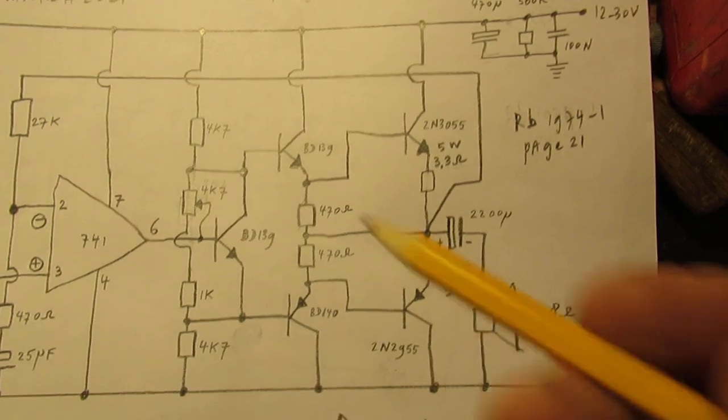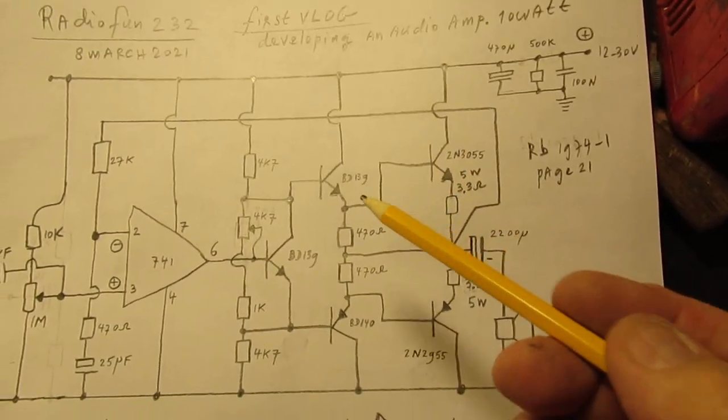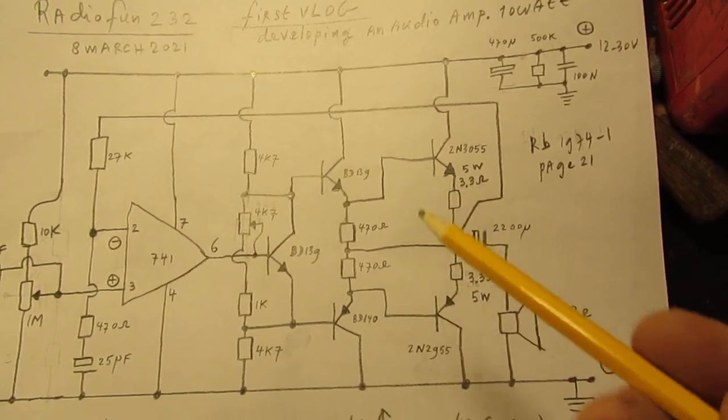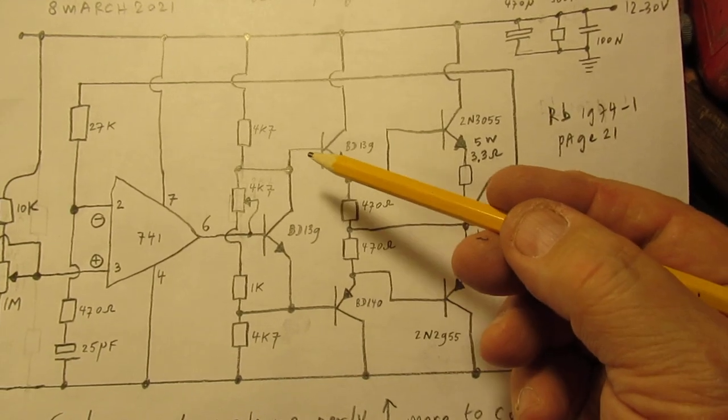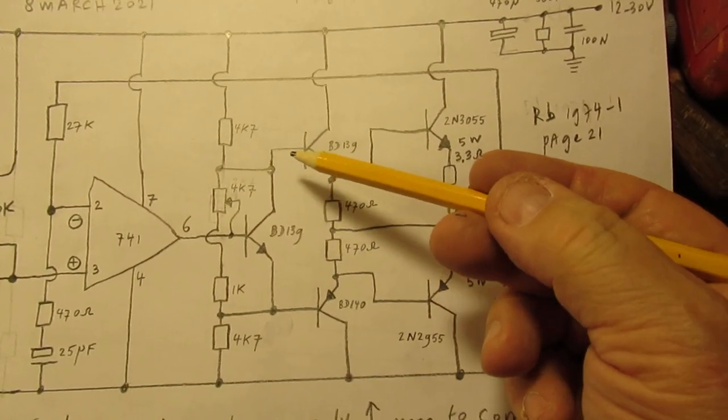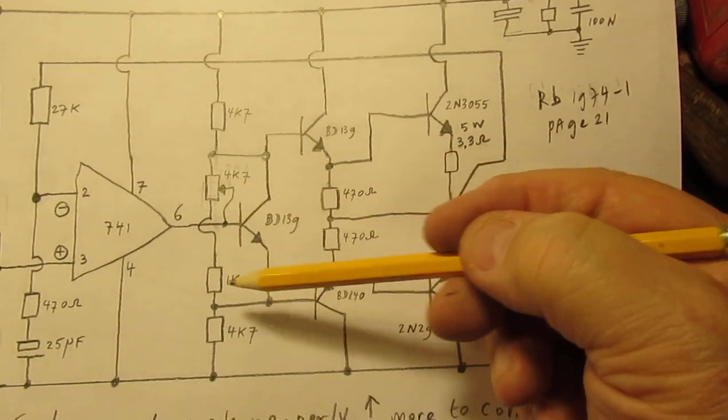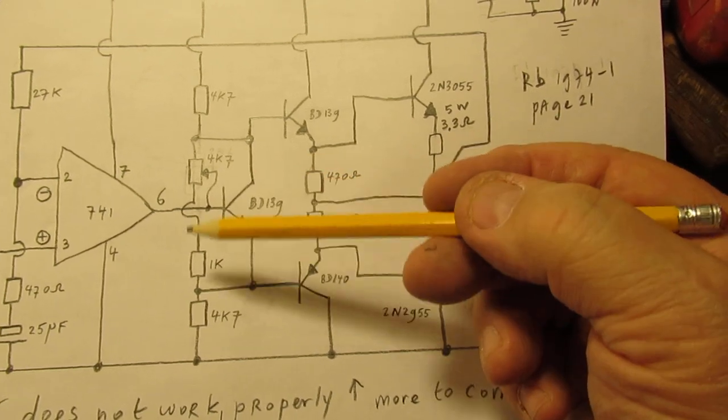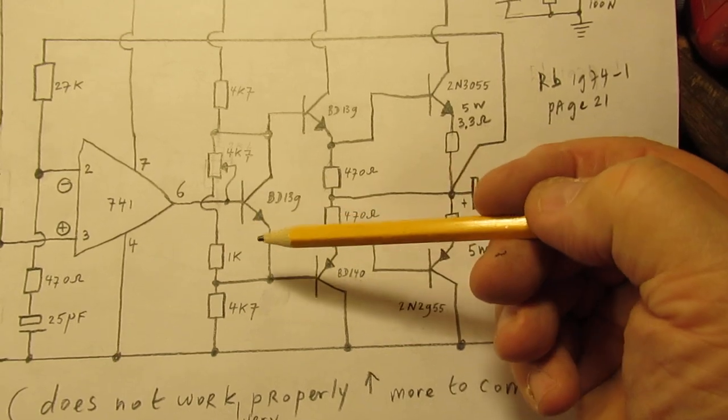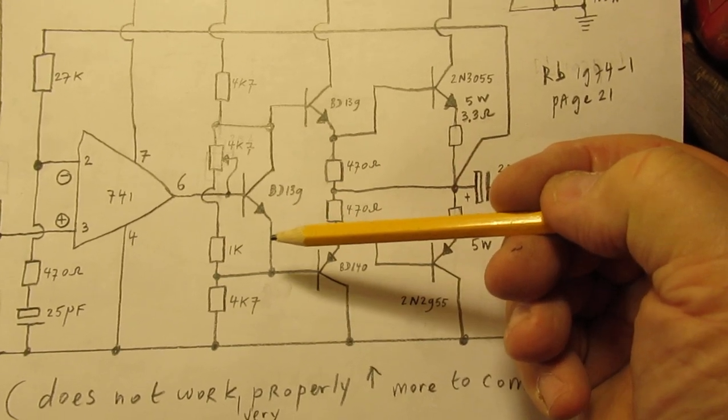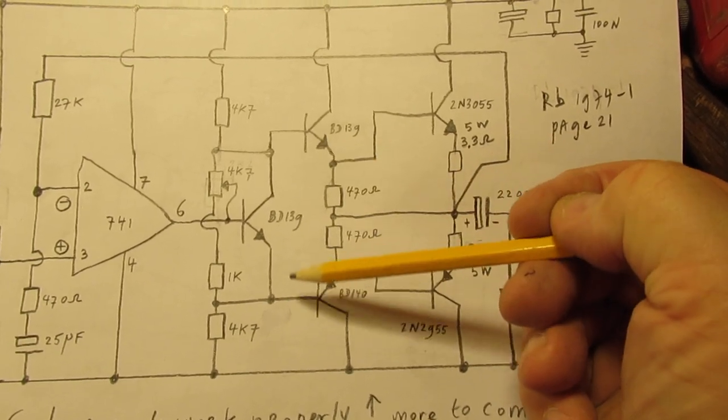And of course this circuit works. This is a classical C-end amplifier made with a Darlington here and a Darlington there. And the bias is set by the voltage drop here from the base of this transistor to the base of that transistor. That's realized here.